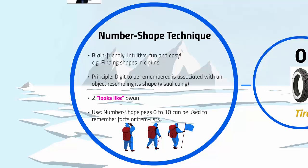For example, the digit 2 looks like a swan and therefore 2 is associated with swan. Now, if you want to remember a fact, you can associate it with the image of swan. I will talk in more detail about the application of the number shape technique later in this video. But first, let's go through the digits 0 to 10 and the number shape pegs associated with them. Remember, the keyword here is 'looks like' — as in what does the number or digit look like.